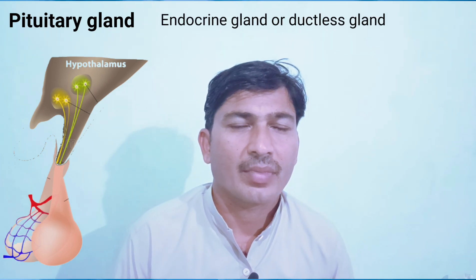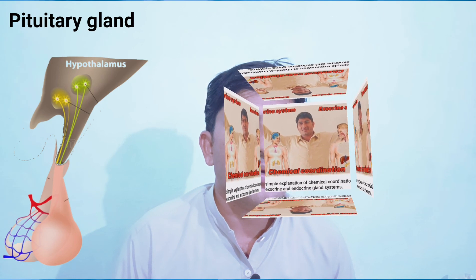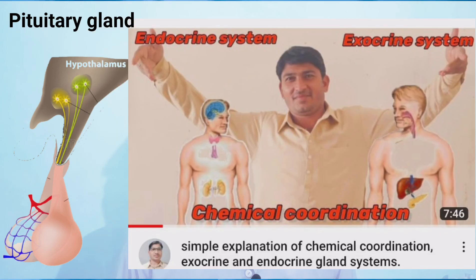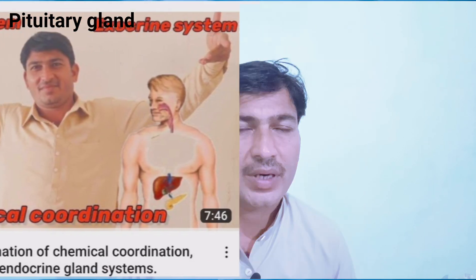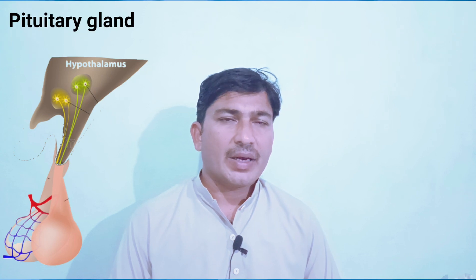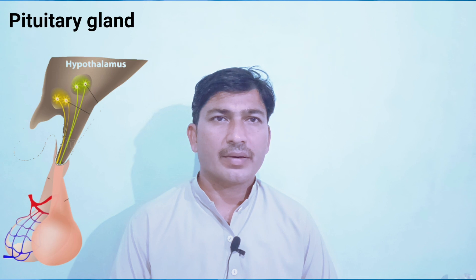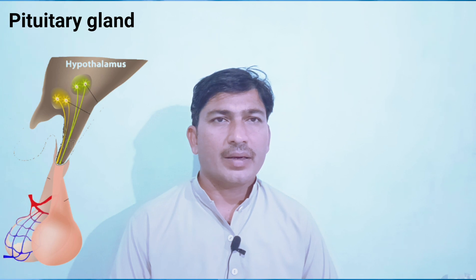Today our topic of discussion is the pituitary gland. The pituitary gland is part of the endocrine system. If you want to know about the endocrine system, go through my playlist — you will find a topic on endocrine and exocrine systems with their differences and types in detail. The pituitary gland is a very important gland of our body; as a gland, it secretes hormones — different types of hormones that activate, stimulate, or start up different activities inside our body.